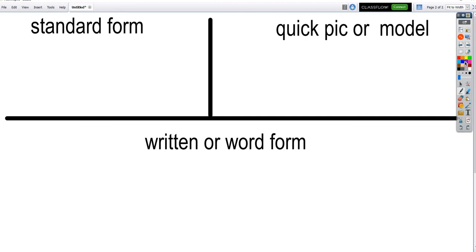All right. So, for this first one, I am going to draw a quick picture or a model of a number. And then we're going to see if we can do the standard form and the written form. So, here is my quick picture or a model of the number. Okay. So, you have to figure out what number I drew in my quick picture or my model. What number did I draw? Exactly. Because 10, 20, 30, 40, 41, 42, 43, 44, 45, 46, 47.